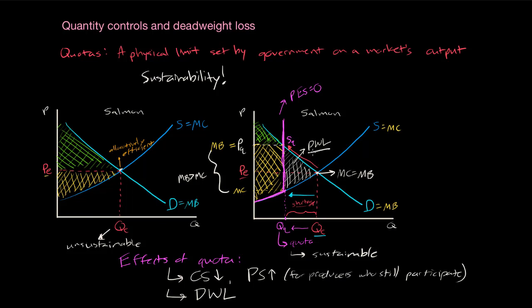Quotas of other types also are going to create a deadweight loss like quotas on the market for wild salmon. Any time a quota is imposed below the equilibrium quantity, it creates a perfectly inelastic supply curve at the quota quantity, leads to a higher price, and reallocates surplus from consumers to producers. Once again, not all producers are better off because there will be fewer producers able to participate in the market, but those that do are able to sell for a higher price and enjoy a higher level of producer surplus.